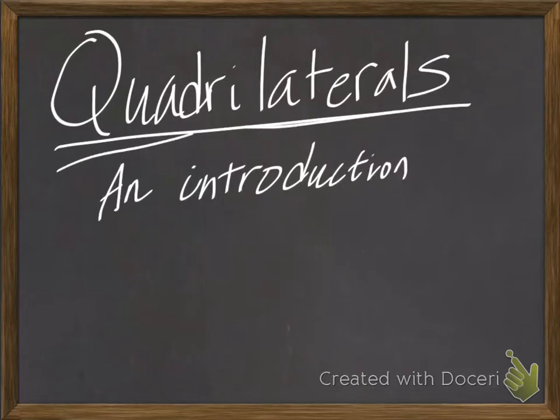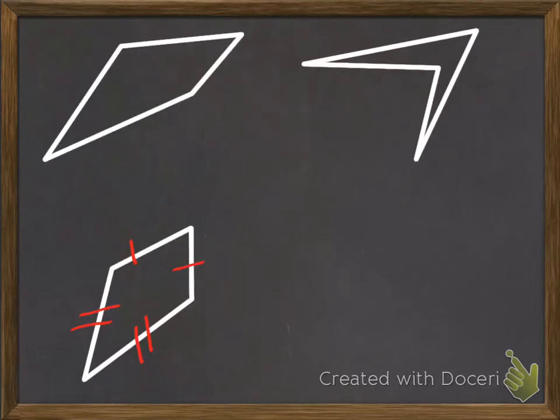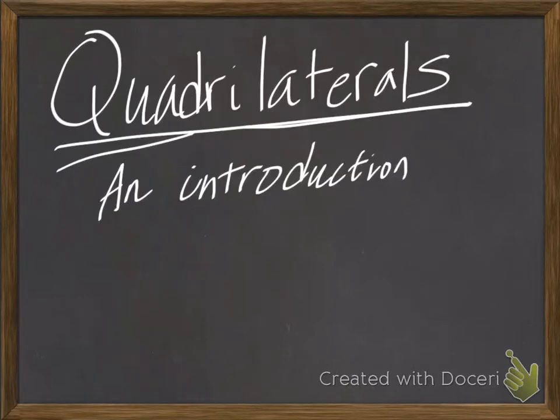Quad meaning four, lateral meaning side, so quadrilaterals. We'll go ahead and go to the next slide and look at a couple of four-sided shapes. My main goal for you today in watching this video is to get a better sense of what the specific names for certain shapes are, because we'll be using these words a lot and it's very important to understand what is what.